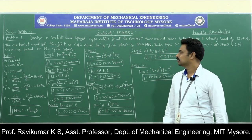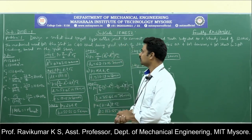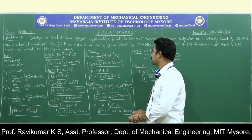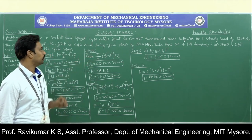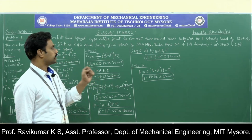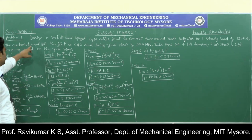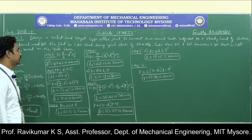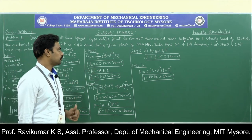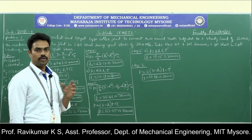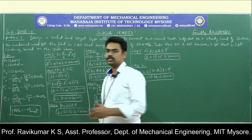We will move on to the numericals now. This is the first problem on the cotter joint. Design a socket and spigot type cotter joint to connect two round rods subjected to a steady load of 120 kN. The material used for the joint is C40 having yield stress of 324 MPa. Take FOS as 4 for tension, 6 for shear, and 3 for crushing based on the yield stress.